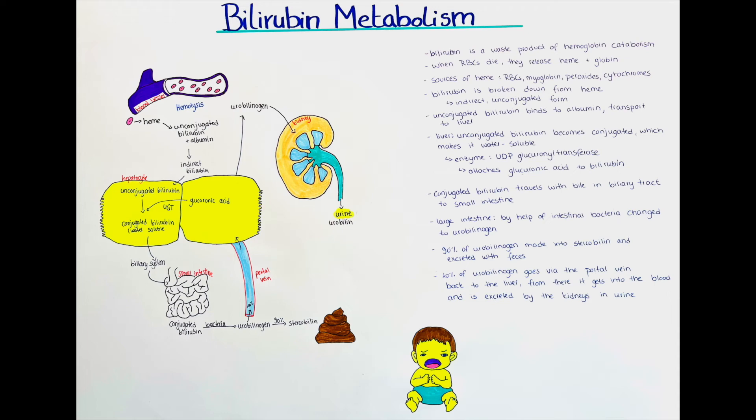Much of this urobilinogen is then converted into stercobilin, which is the form excreted in the feces. In plain terms, stercobilin is the form that is pooped out.